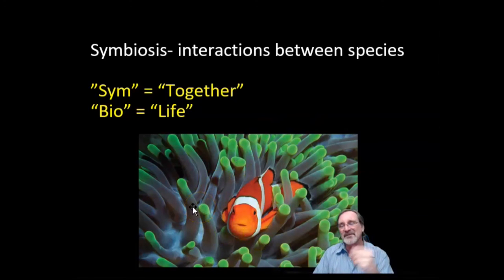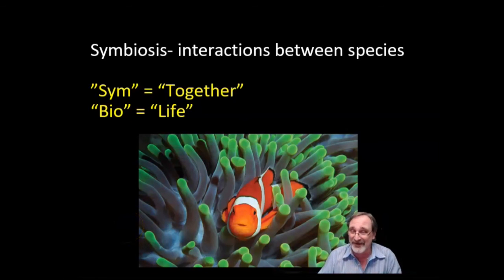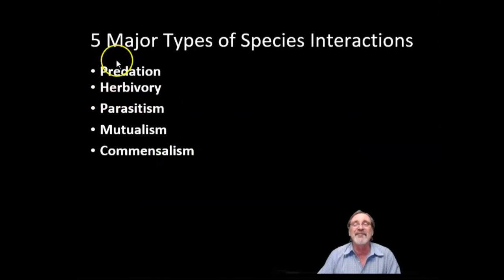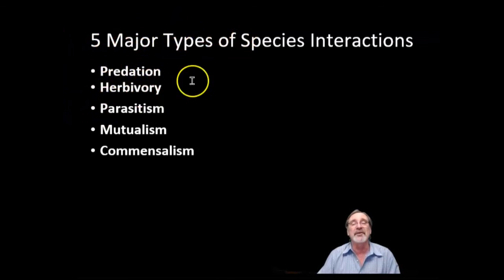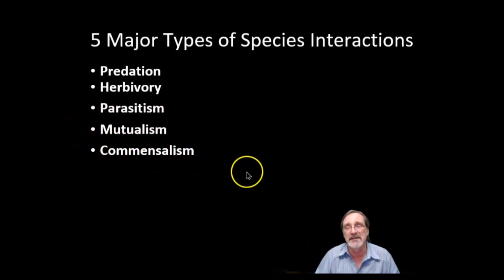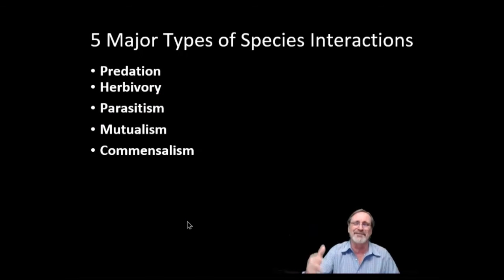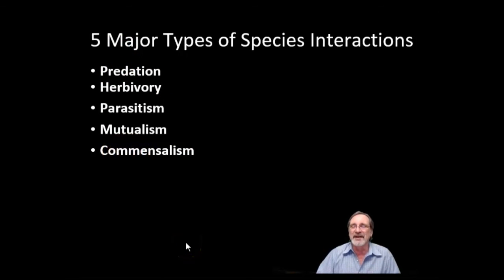Let's go ahead and get into the various types of relationships that living things have. From the reading assignment you should already be familiar with them, but write them down again — it helps you learn. The five major types of species interactions are: predation, herbivory, parasitism, mutualism — where it's mutually beneficial — and commensalism — where it helps one organism but doesn't really help or hurt the other.